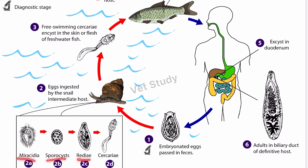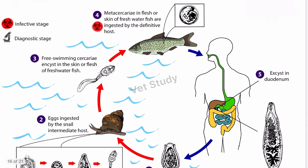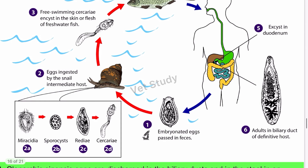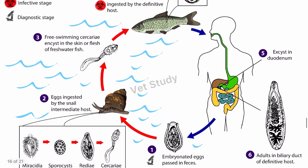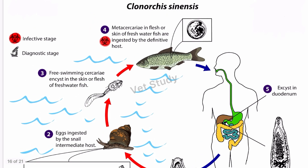Inside the snail, the miracidium forms sporocyst, redia, and cercaria — the final free-swimming stage. The cercaria leave the snail and encyst in the skin or flesh of freshwater fish as metacercaria. When the definitive host eats infected fish, the metacercaria excyst in the duodenum and adults form in the bile duct, just as in Opisthorchus. The life cycle and pathogenesis of Clonorchus sinensis are very similar to Opisthorchus.